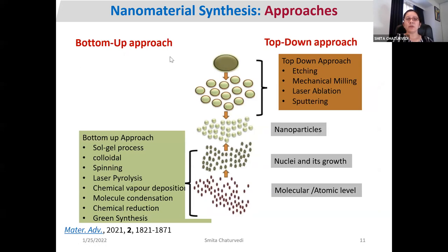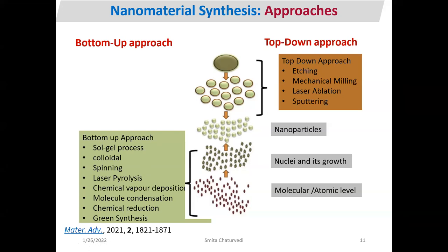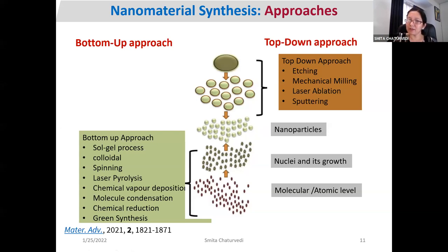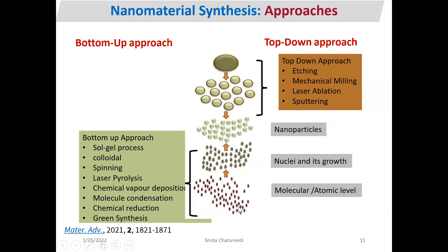In the top-down approach, you take a bigger chunk of material and divide it into smaller and smaller pieces. In the bottom-up approach, you have the smallest particle — at molecular or atomic level — and then those atoms act as nuclei for growth. Nuclei act as a template to grow the particles, and nanoparticles grow around the nucleus using agglomeration or other techniques.